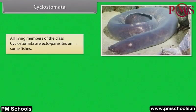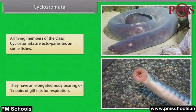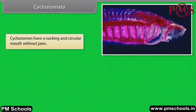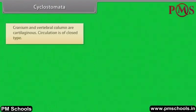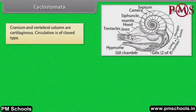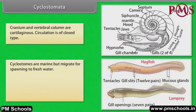Cyclostomata. All living members of the class Cyclostomata are ectoparasites on some fishes. They have an elongated body bearing six to fifteen pairs of gill slits for respiration. Cyclostomes have a sucking and circular mouth without jaws. Their body is devoid of scales and paired fins. Cranium and vertebral column are cartilaginous. Circulation is of closed type. Cyclostomes are marine but migrate for spawning to fresh water. After spawning, within a few days they die.